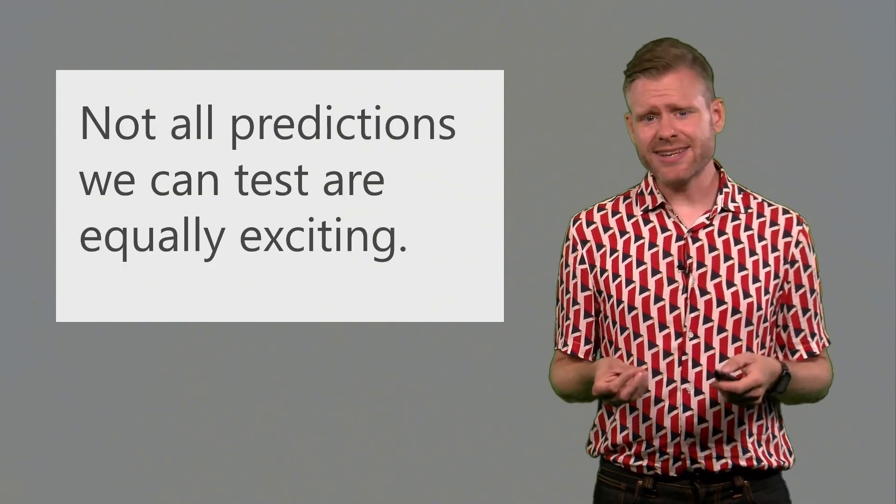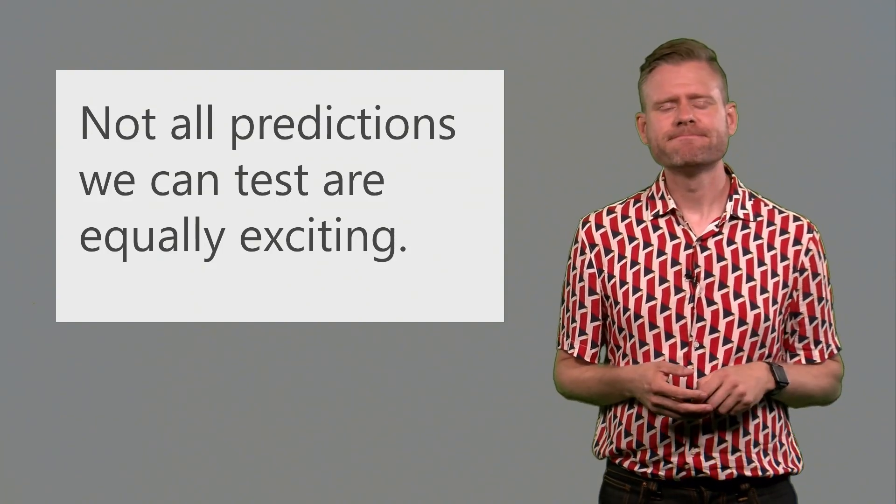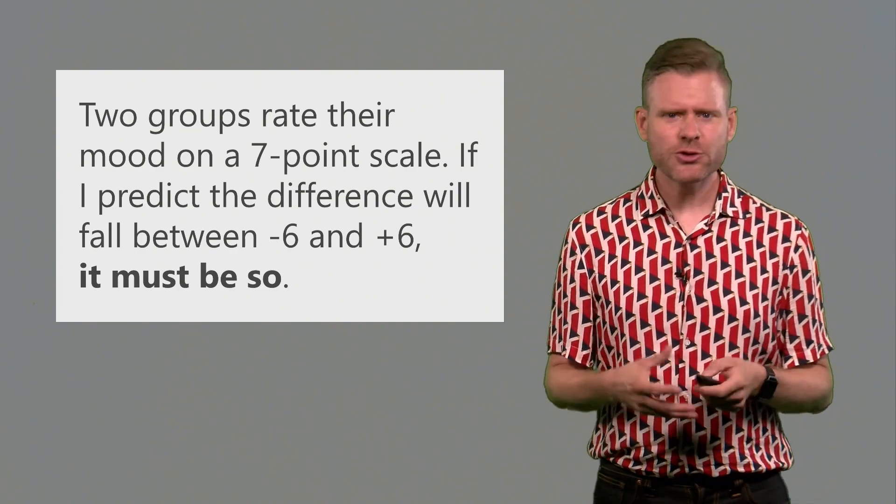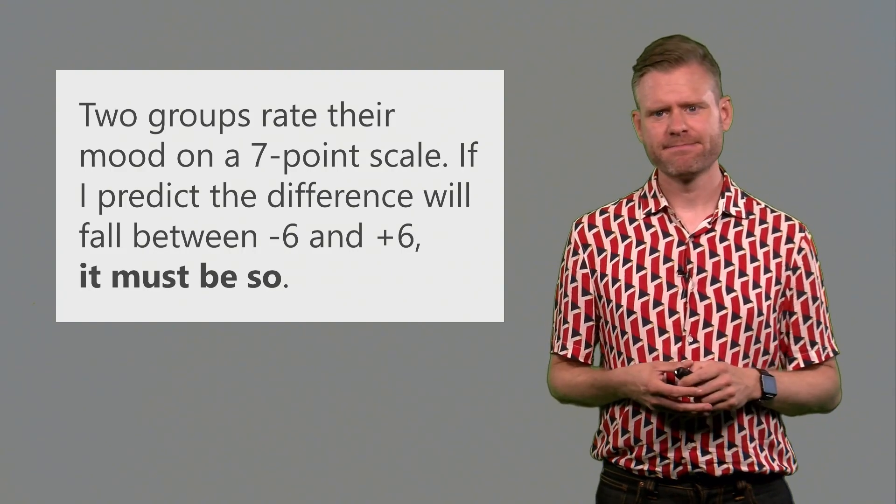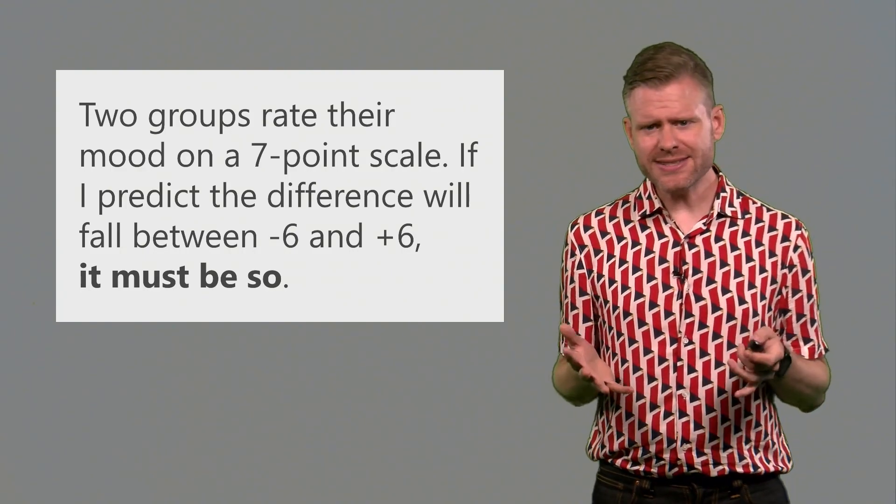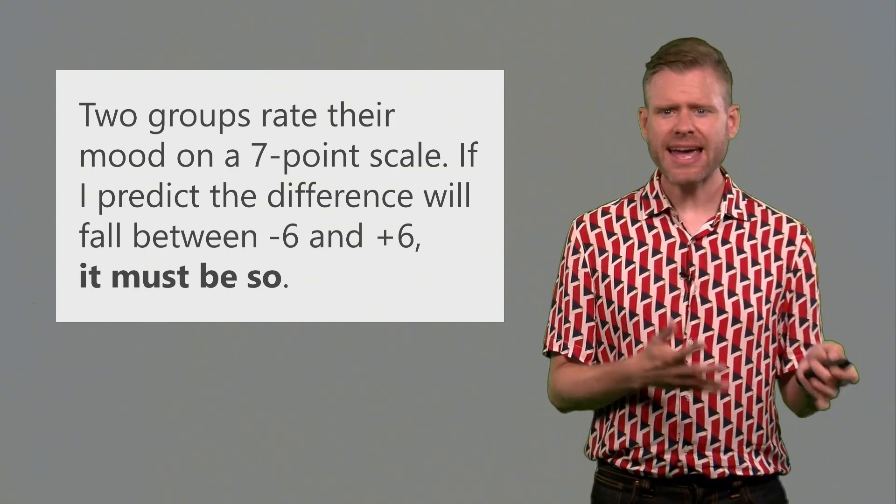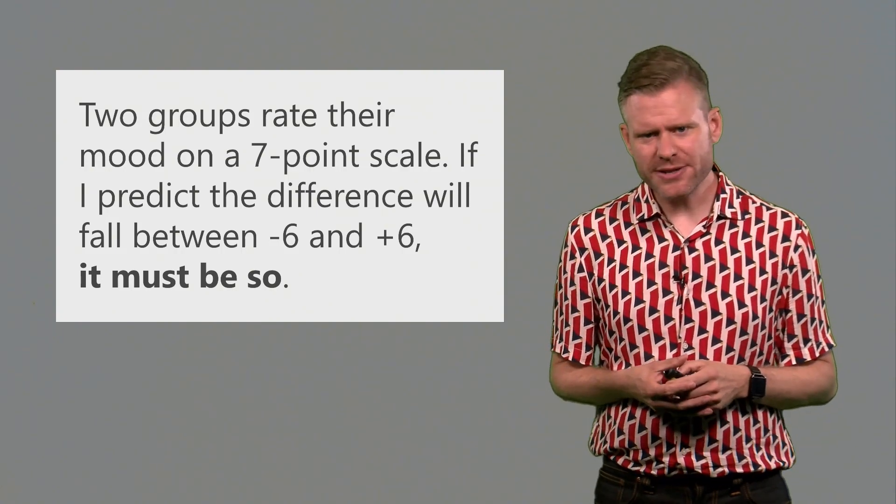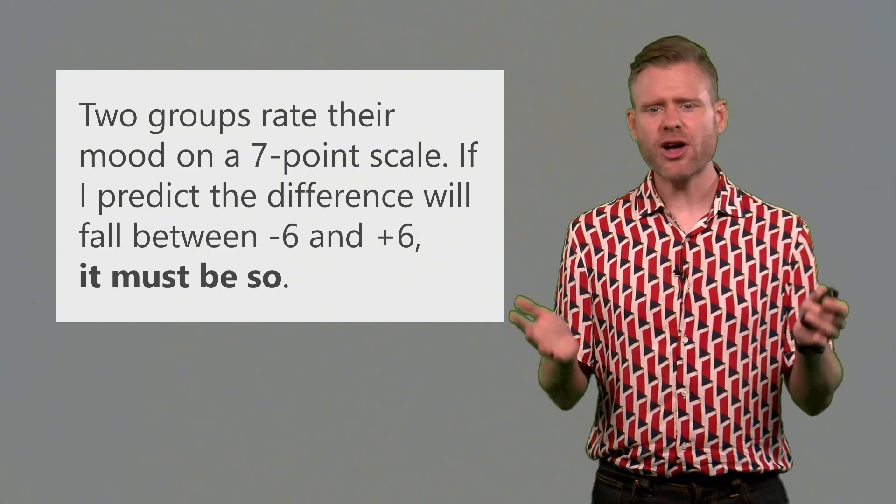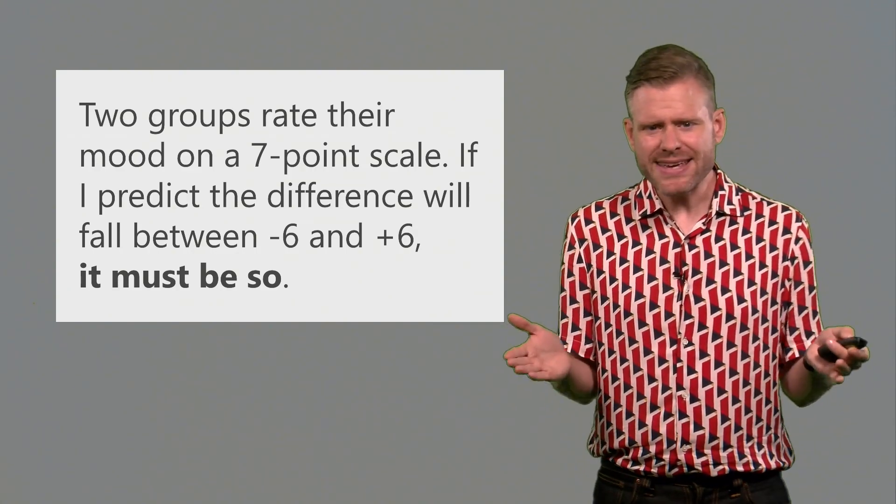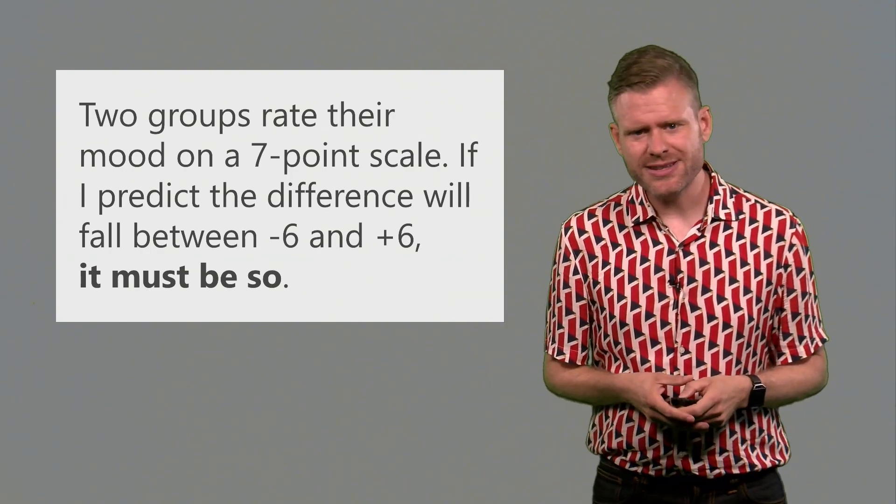Now not all predictions that we can test are equally exciting. Let's start with a clear and extreme case. Let's say that I design a study where I ask two different groups to rate their mood on a scale from 1 to 7. I make the prediction that the difference in the means between these two groups will fall between minus 6 and plus 6. Now if I make this prediction, you are not going to be impressed. This is actually the entire range of possible values. It must be that the answer is somewhere on this scale. So my prediction is not especially exciting.